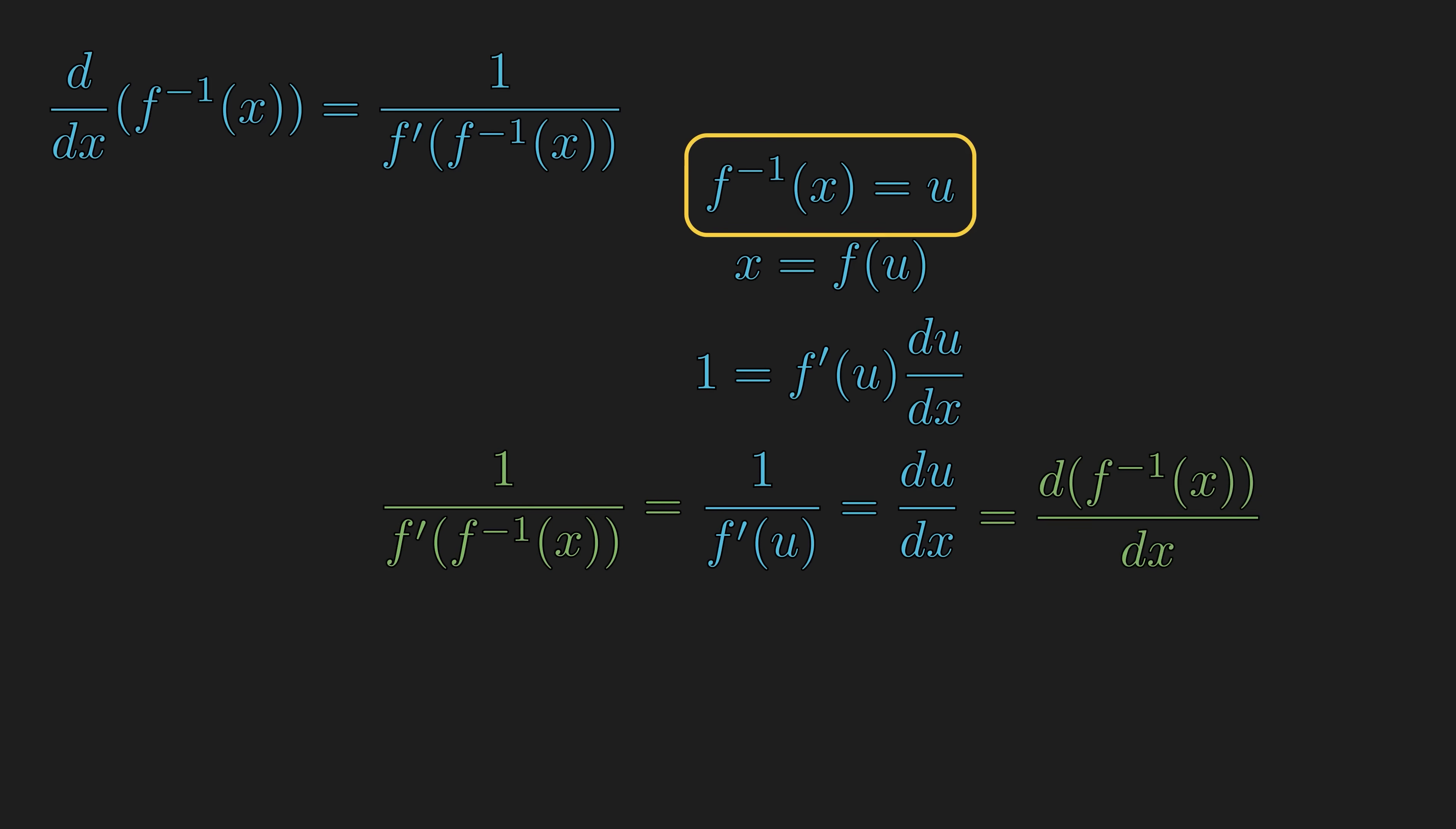So, we can push some symbols around, but what does this actually mean? Suppose we have the graph of a one-to-one function. Then, each point on the graph represents a relationship between an input x and its output f of x. And since the function is invertible, we can think of y as the input and x as the output with the mapping f inverse.